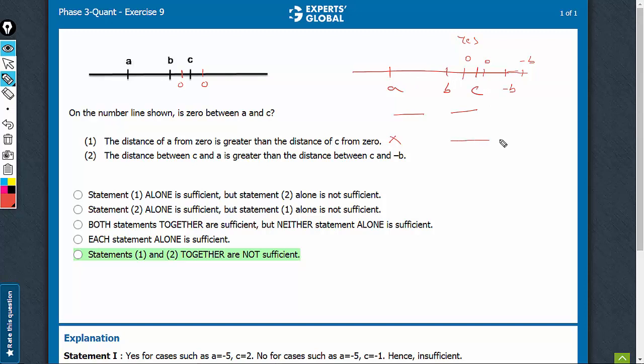You want to assume values. For this case, the values can be, we have A, C, B. Let us say this is minus 10, this is minus 2, this is minus 1. See, minus B would be positive 2, which would be only 3 units away and A, C is 9 units. So, statement 2 also can lead to yes as well as no. So, not sufficient.